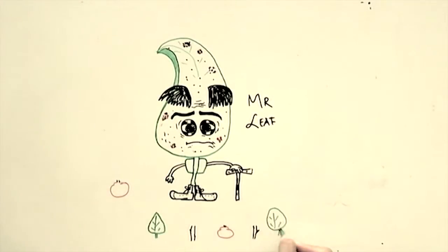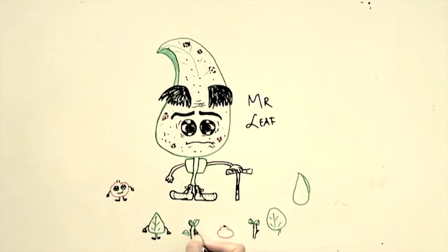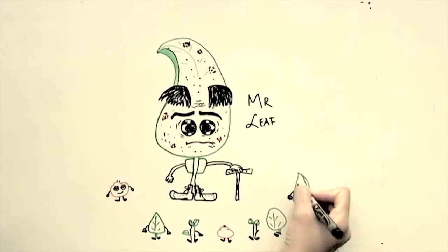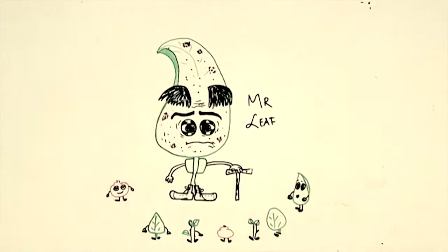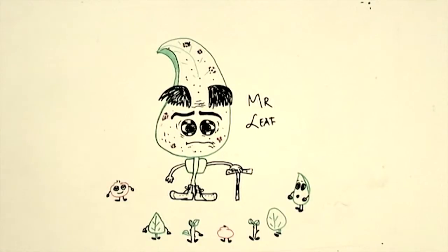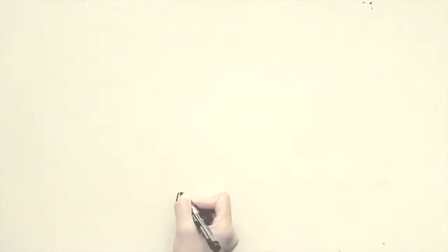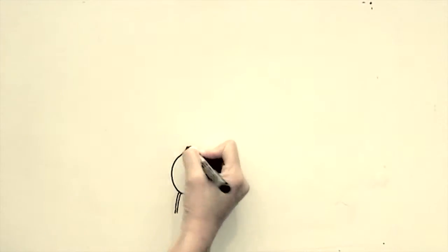One day Mr. Leaf decided that none of the leaves, fruits or twigs would suffer from this disease in the future. So he called the younger generation from his grove and surrounding groves and told them how he got the disease in order to prevent them from the same fate as his. But he maintained quite a safe distance from them to avoid disease transmission. And he began his story.